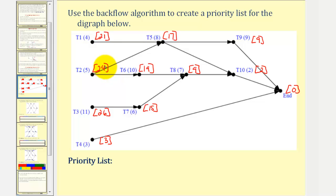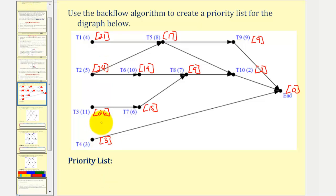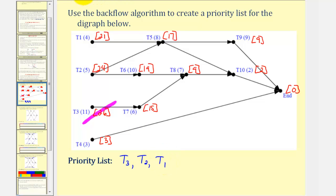Now we can make our priority list by listing tasks from highest critical time to lowest. The highest critical time is twenty-six hours, starting with task three. That is followed by task two at twenty-four hours, and then task one at twenty-one hours. Next we have task six at nineteen hours, followed by task five at seventeen hours.